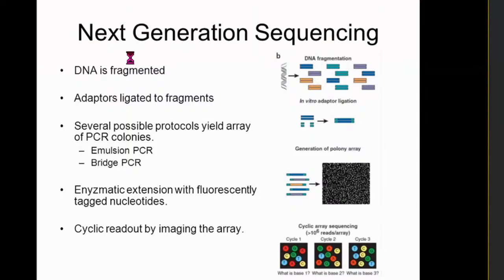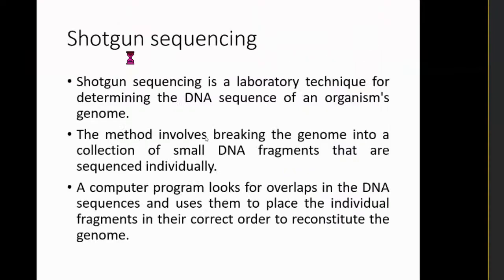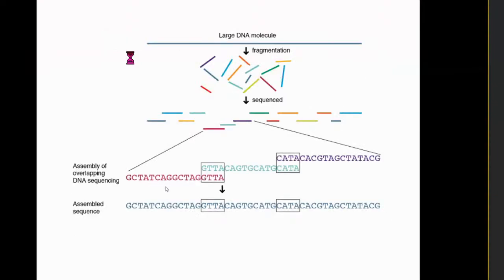In shotgun sequencing: larger DNA is fragmented into small DNA pieces. Those small sequences are separately sequenced. The separately sequenced DNAs undergo overlapping, and after overlapping we get the assembled DNA. For reverse transcriptase and cDNA synthesis: in the mRNA strand, we have oligo-dT primers. Incubating with reverse transcriptase enzyme produces complementary DNA. After receiving the cDNA, we remove the mRNA.